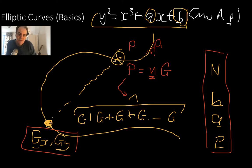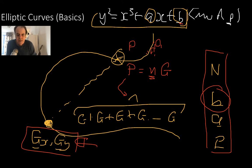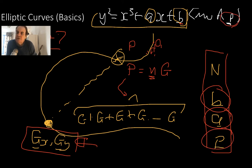When we specify our curve, we define n — the number of points possible from the generator point we've picked. The more points we have, the more secure it will be. We have the b value; a typical curve is y² = x³ + 7, so b equals 7 and a equals 0. The p value is the prime number modded by — that's what's called the finite field. So that's how we specify our elliptic curve method.